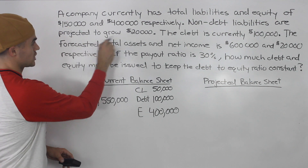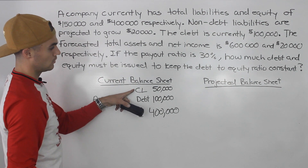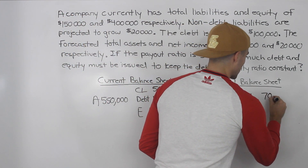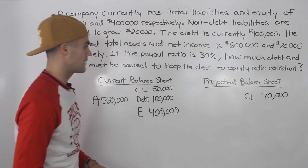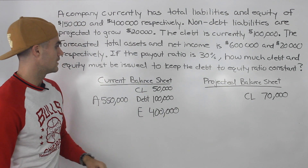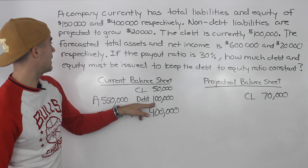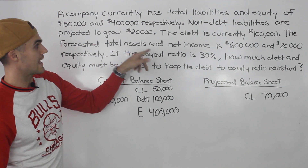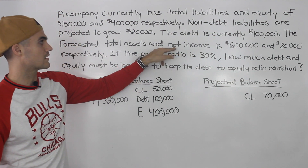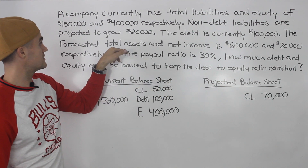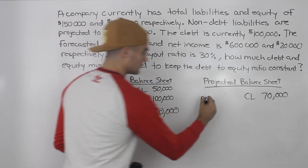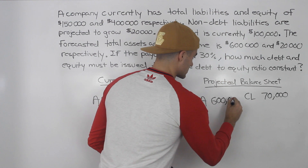Since non-debt liabilities are projected to grow by $20,000, the current liabilities on the projected balance sheet will be $70,000 — that's $50,000 plus $20,000 growth. We can fill that in right away. The forecasted total assets are $600,000, so that goes on the projected balance sheet. Net income is $20,000 — that's an income statement amount, so let's set that aside for now.